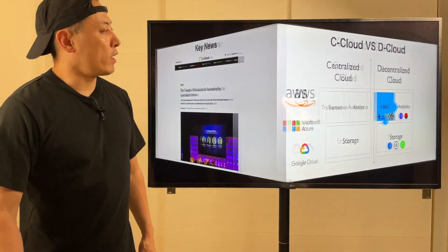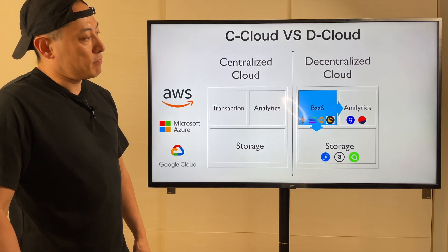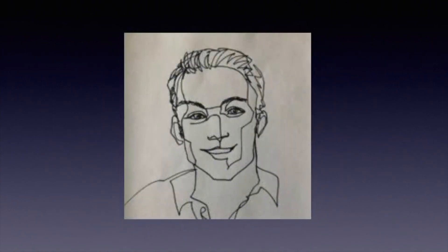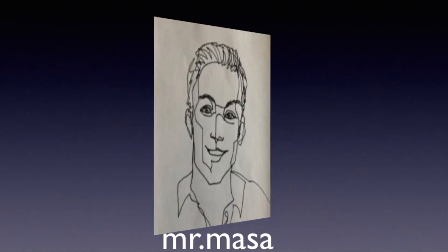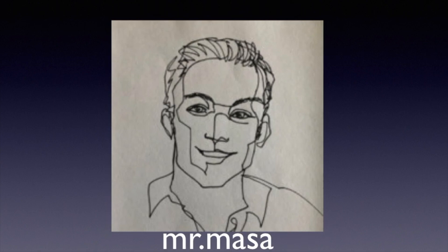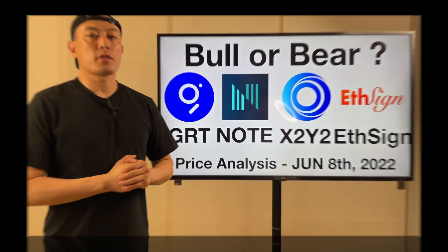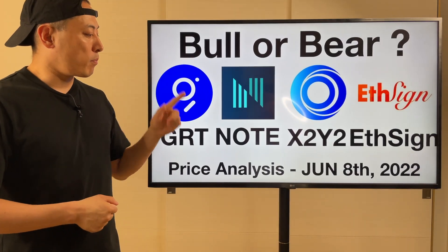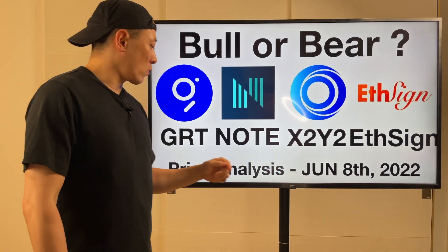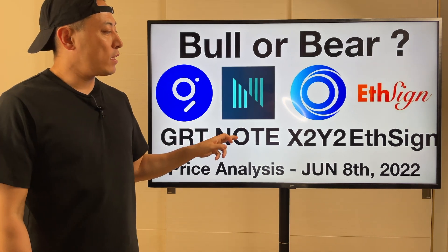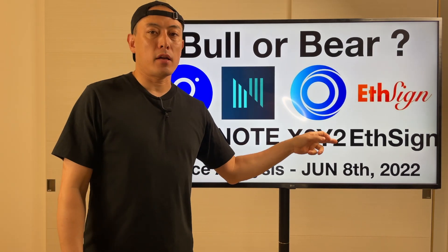So to help you understand the point, it's a review item, so what's a graph? This is my price analysis during H4 for GRT, NOTE, X2Y2, and iSUN. Okay, so let's start.